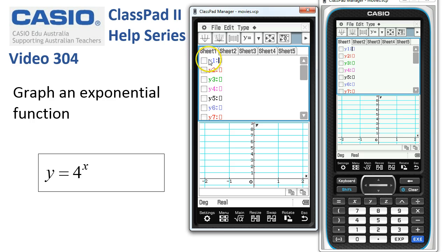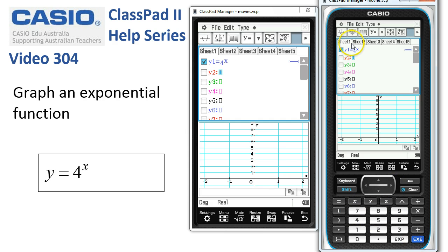Now returning upstairs, we'll tap against y1 and we need 4 to the power of x using the keys here, and then tap execute to set that function in, and ClassPad tidies it up.